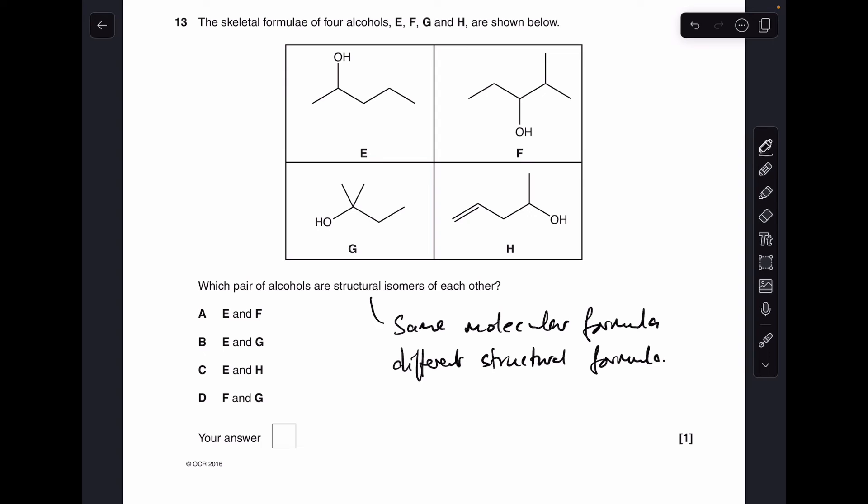Number 13. Just a reminder there of the definition for structural isomers. They've got the same molecular formula but different structural formula. So the first thing we can do is rule out F because that's got an extra carbon. And the other thing we can do is rule out H because that's got a CC double bond. So it'll have fewer hydrogens. So E and G is the answer. So B.